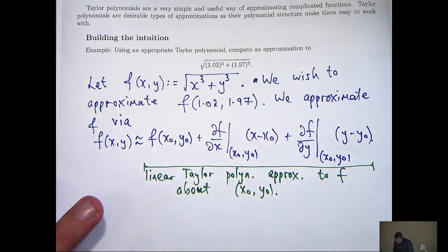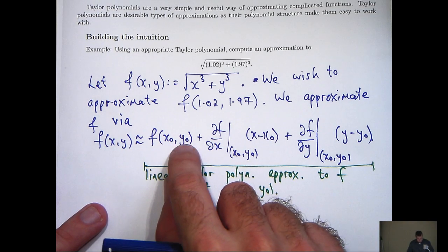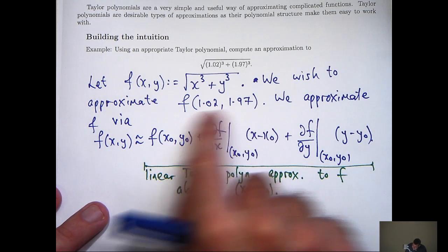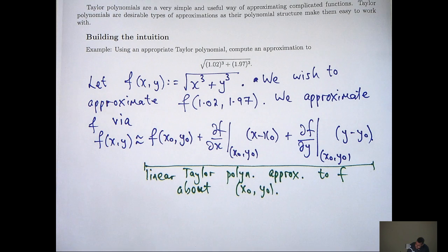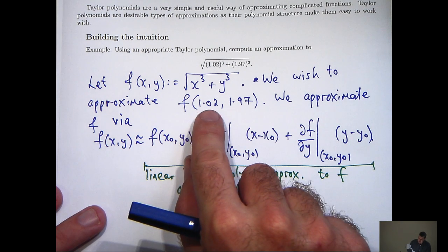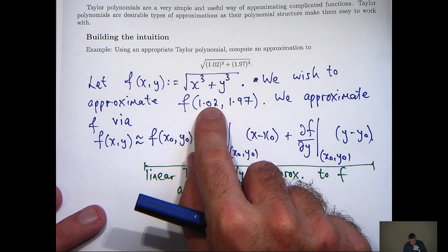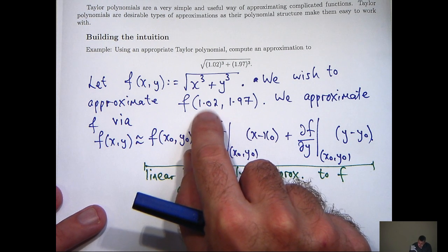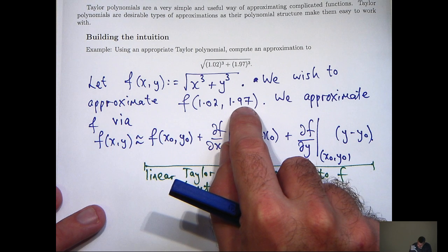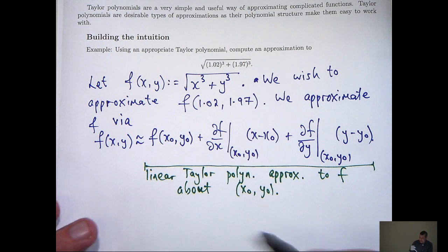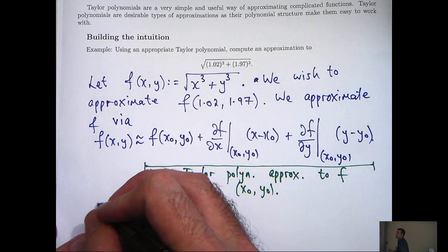Okay, so the first thing I would like to do is to choose x0 and y0 such that this right-hand side is simple, and the calculations involved are simple. So, if I look here, well, 1.02 is almost equal to 1, it's close to 1, and 1.97 is close to 2. So I'm going to make a choice.